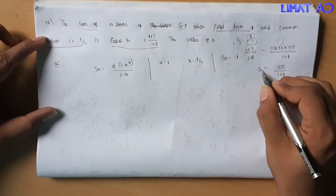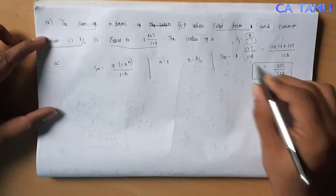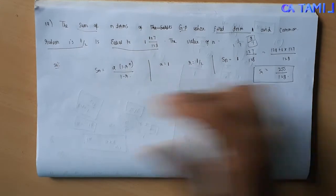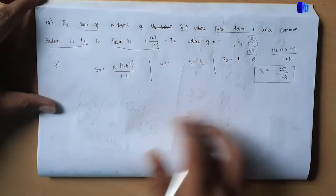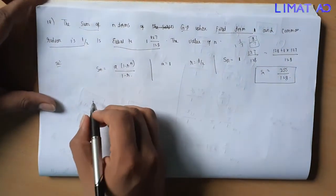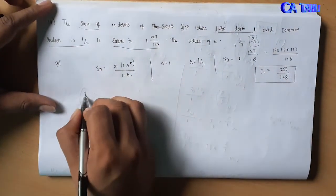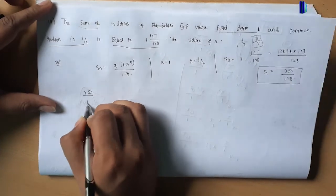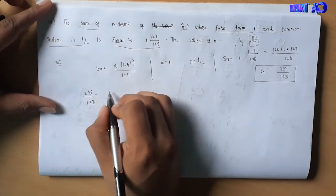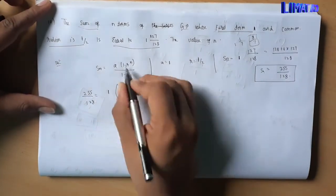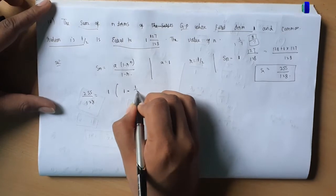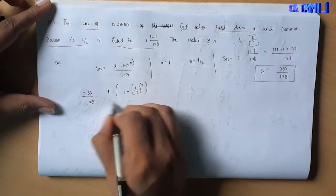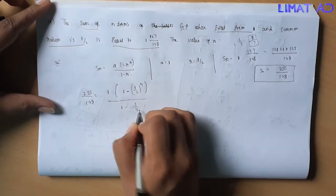So the Sn value is 255 divided by 128. Now we set this equal to the GP sum formula: a into 1 minus r to the power n, divided by 1 minus r, where a equals 1 and r equals 1/2.